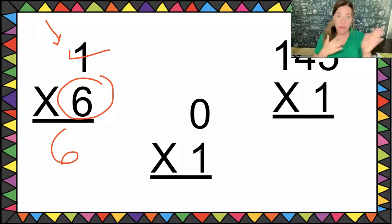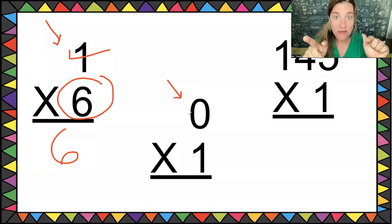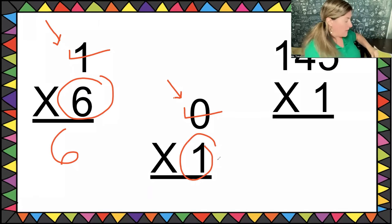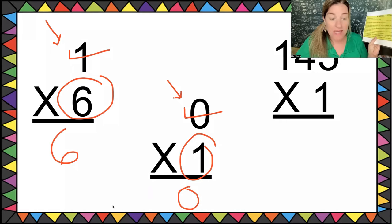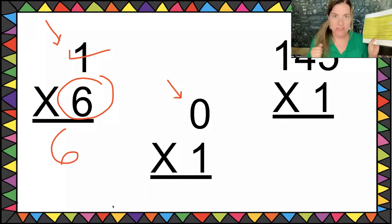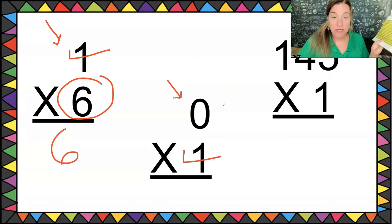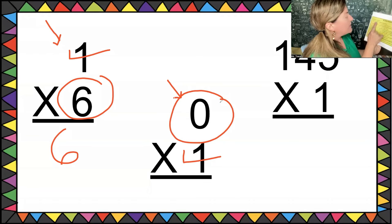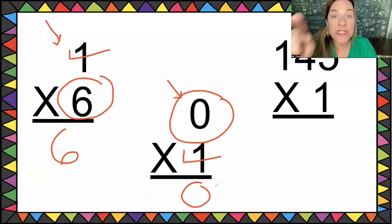Zero times one — this one looks a little interesting. We learned the zeros rule, but let's also use the ones rule here. Using zeros rule: one is the base number, zero times any base number equals zero, so the answer is zero. Using the ones rule: zero is the base number, one times any base number equals itself, so the answer is also zero. Same answer — you can choose which rule you want to use.